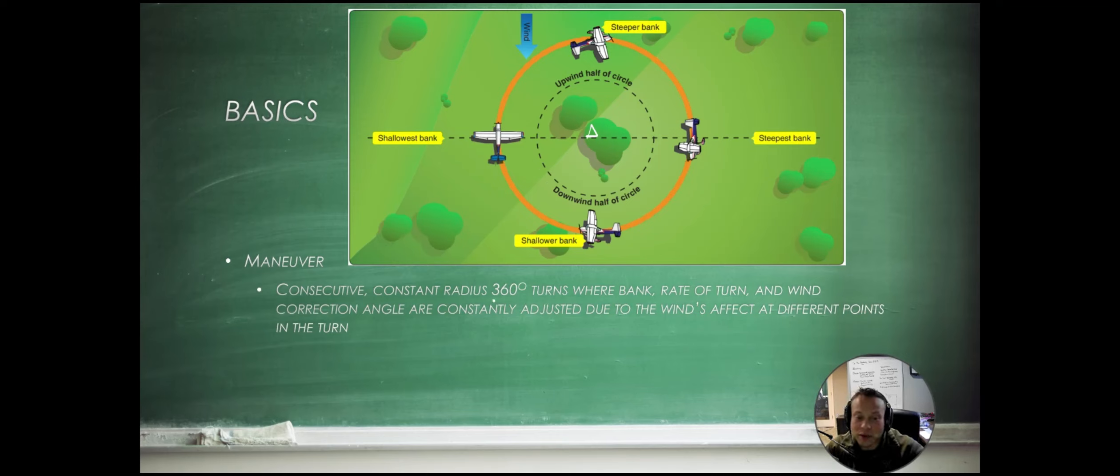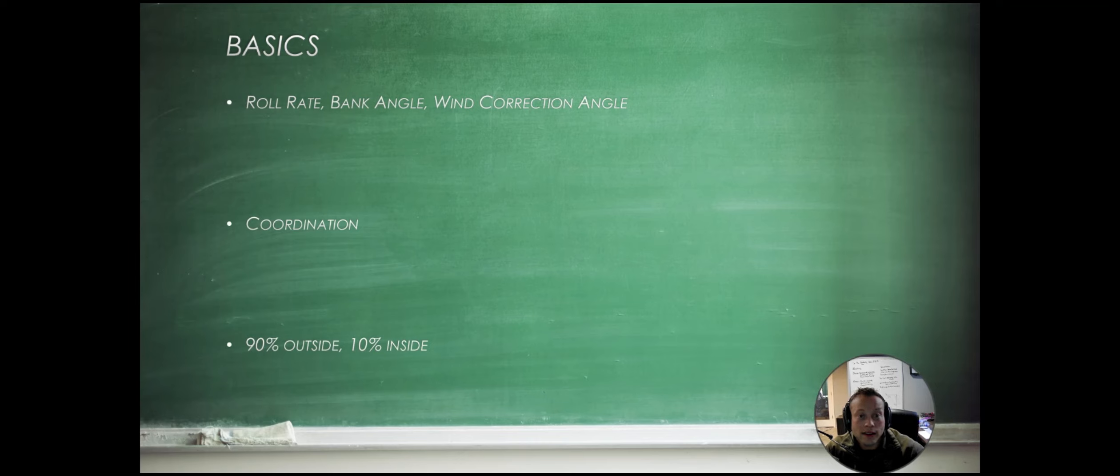Consecutive constant radius 360 degree turns where bank, rate of turn, and wind correction angle are constantly adjusted due to the wind's effect at different points of the turn. So if we're downwind and we need to execute this turn here, we're going to enter a steep turn and then roll out at a shallower bank when we are crosswind. Then once we are nose into the wind or upwind, our wings are practically going to be level because we're not really fighting that wind anymore. And then we're going to enter a turn and steepen it as we get crosswind or base.